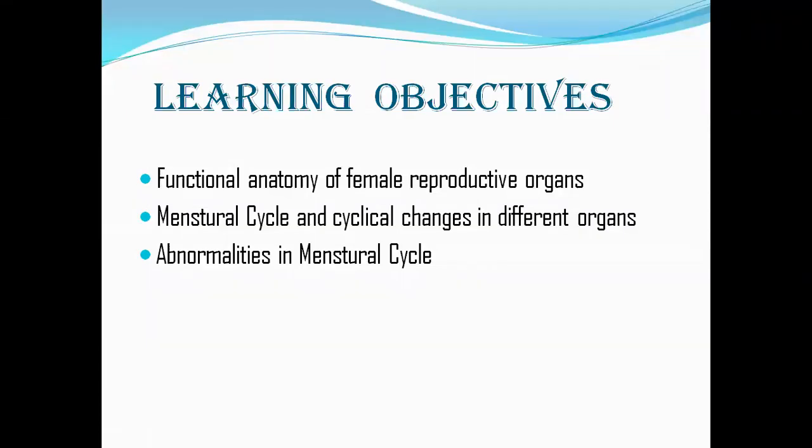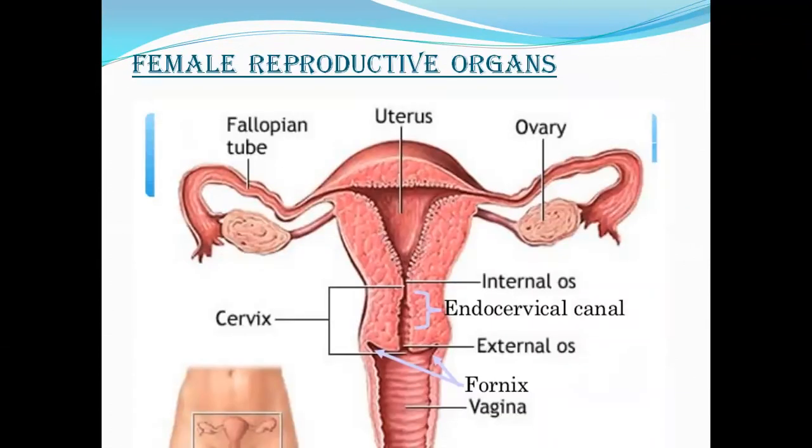Hello everybody. Today is my fifth class and I'll be starting the female reproductive system. Today's learning objectives will be briefly knowing about the functional anatomy of female reproductive organs, mainly focusing on the menstrual cycle, the cyclical changes which occur in different reproductive organs in females during this menstrual cycle, mainly in the ovaries and the uterus, and finally some abnormalities of the menstrual cycle.